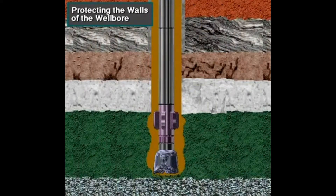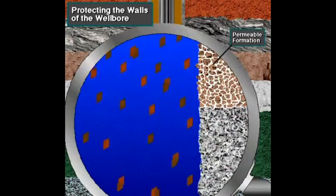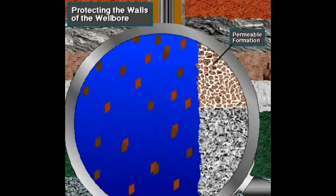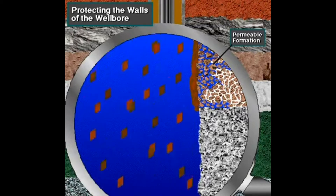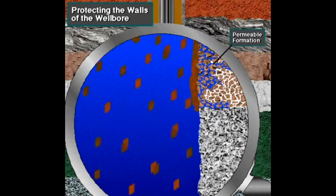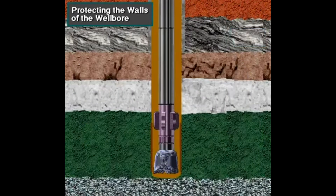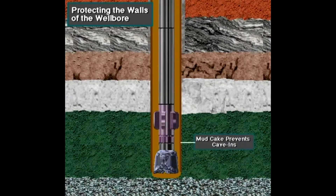Mud stabilizes the hole and keeps it from caving in. As mud moves up the hole, it usually flows by permeable formations — those that allow fluid to flow. When mud is next to a permeable formation, pressure forces the liquid part of the mud, the filtrate, into tiny openings or pore spaces in the formation. This leaves behind a thin sheath of solid particles known as mud cake, which plasters the side of the hole, much like plaster on the wall of a building, helping keep the hole from caving in.